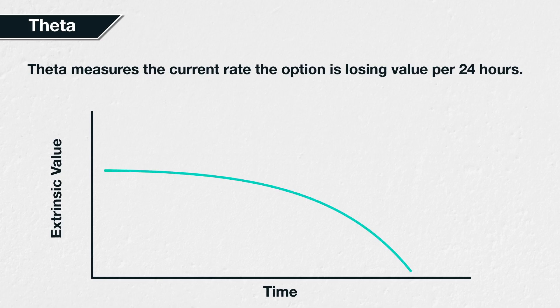An in-the-money option will have a higher total price than an out-of-the-money option; however, part of this higher total comes from its intrinsic value, which does not erode as time passes. This is why both out-of-the-money and in-the-money options have a smaller theta than the at-the-money option — because they are only losing the extrinsic portion of their value as time passes.